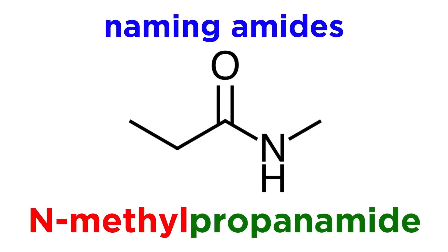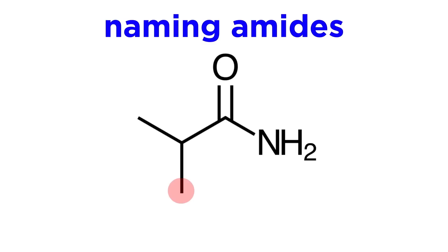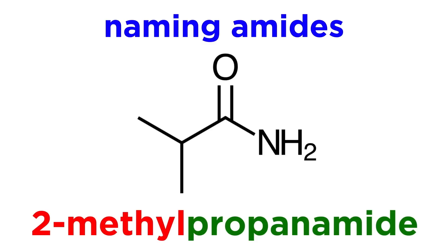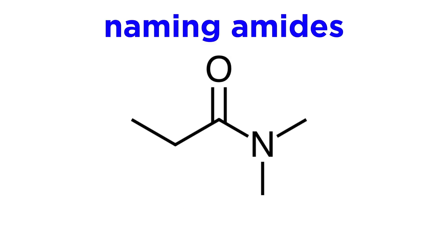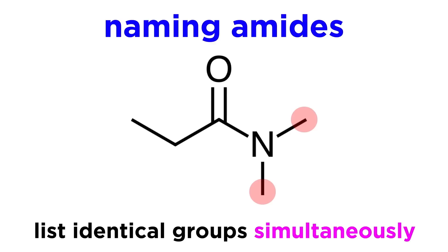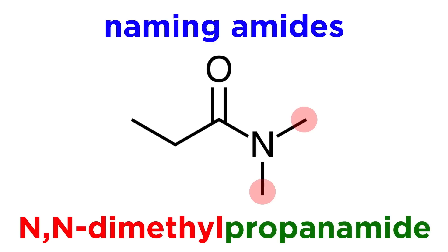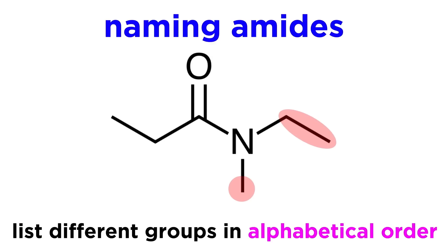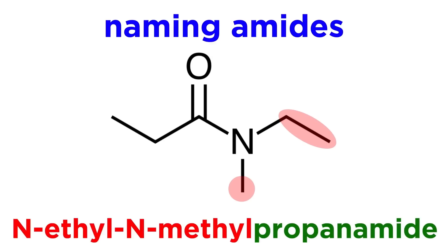We specify that we are referring to alkyl groups on the nitrogen atom by preceding them with a capital N. For example, this is N-methylpropanamide. The N specifies that the methyl group is attached to the nitrogen atom and not to the main chain. If it were on the main chain, we would refer to it just as we would for an aldehyde or carboxylic acid, with something like 2-methylpropanamide. We can also have two alkyl groups attached to this nitrogen. If they are the same substituent, we can list them simultaneously, so this would be N,N-dimethylpropanamide. We need both N's to make it clear that both methyls are bound to this nitrogen atom. If they are not the same substituent, we will have to list them in alphabetical order, so this would be N-ethyl-N-methylpropanamide.